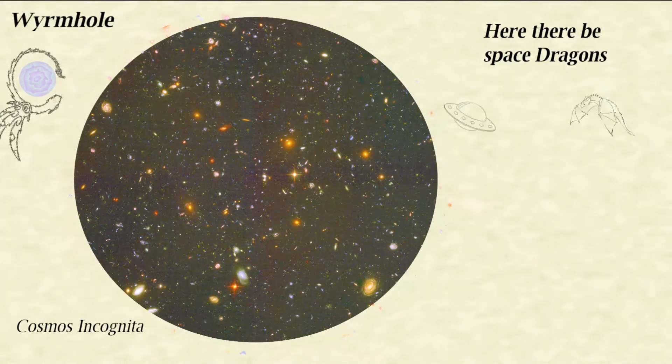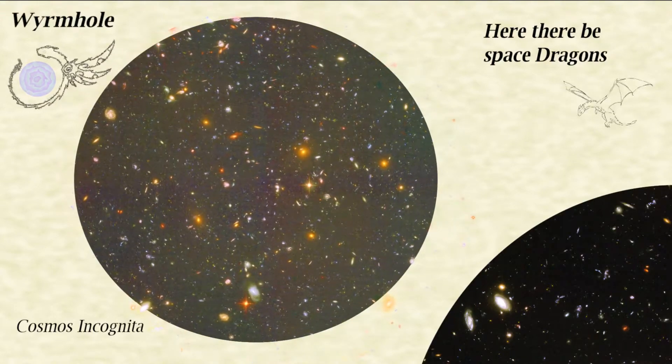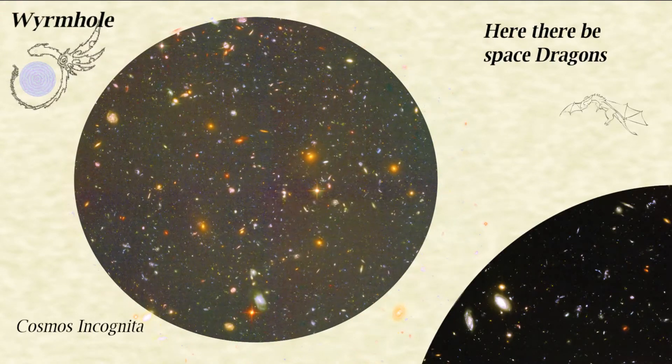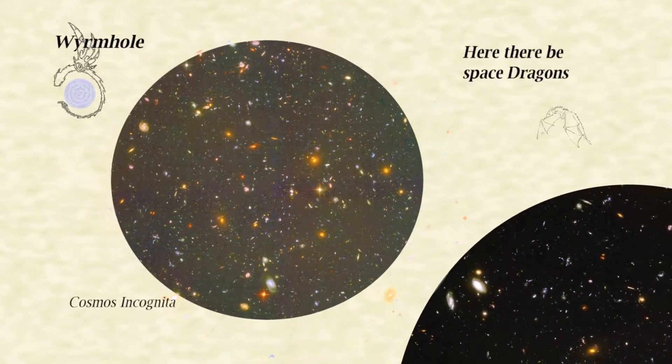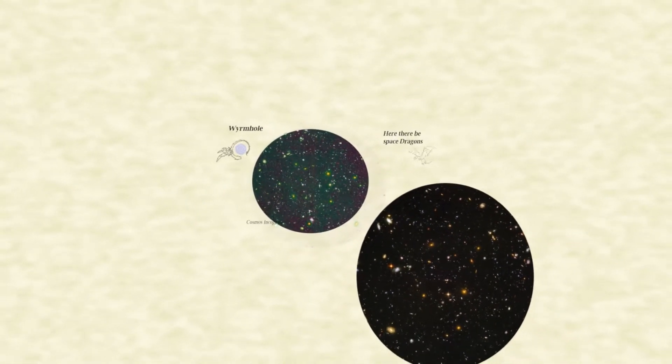With the discovery of dark flow, we have strong evidence that there's enough matter outside of our visible universe to affect things that we can see. But how much matter exists, or how big the unseen area is, we may never know.